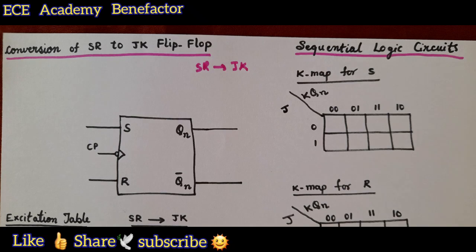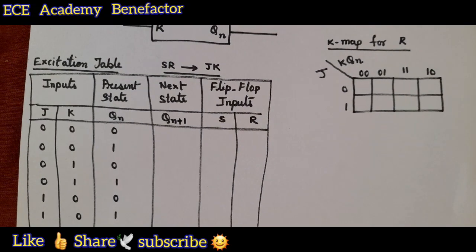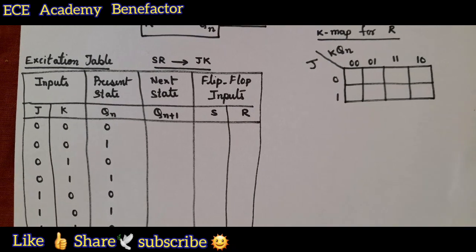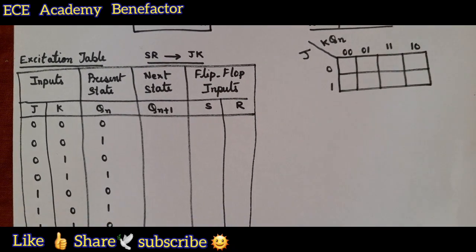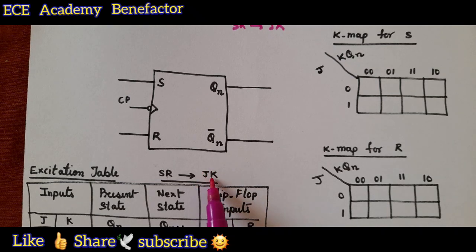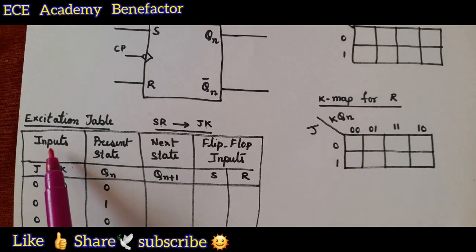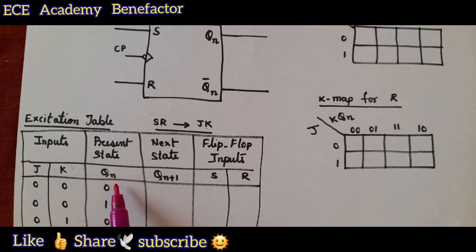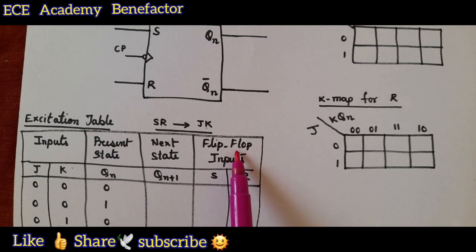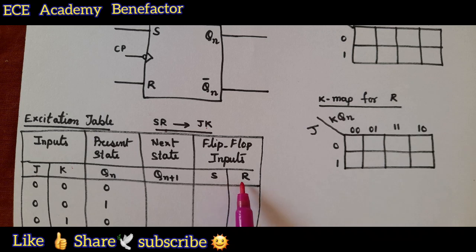For doing this we need an excitation table which requires 4 columns: the input column, present state, next state, and flip flop inputs. We need to convert SR to JK, so J and K are the inputs. We have written inputs as J and K, present state is Qn, next state is Qn+1, and the flip flop inputs are SR since the flip flop given to us is SR.